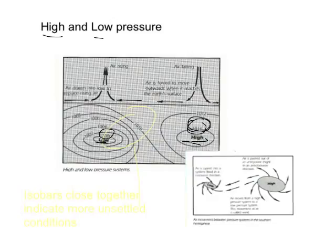Isobars tend to work like contour lines. If you've got contour lines on a topographic map that are really close together, it means there's quite a significant change in the topography of the land. Isobars work the same way — if the isobars are really close together, it's showing quite a lot of unsettled weather and a large change in pressure. We tend to get closer isobars with low pressure systems, but not always.